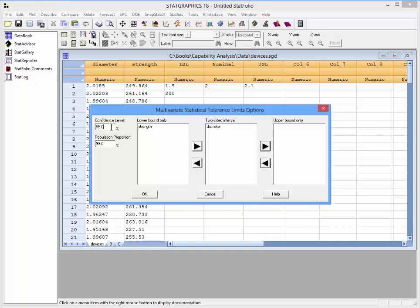I also need to specify the level of confidence C, which by default is set to 95%, and the proportion of the population that I wish to bound by my tolerance limits, which by default is set to 99%. I'll take those defaults and press OK.